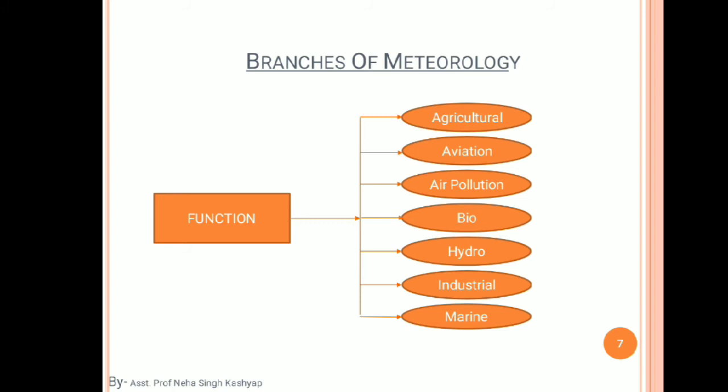The second branch category is function, which has been divided into seven sub-categories: agriculture, aviation, air pollution, bio-meteorology, hydro-meteorology, industrial meteorology, and marine meteorology. Agricultural meteorology is connected to crop production, livestock production, and soil management, combining these functions with weather elements.